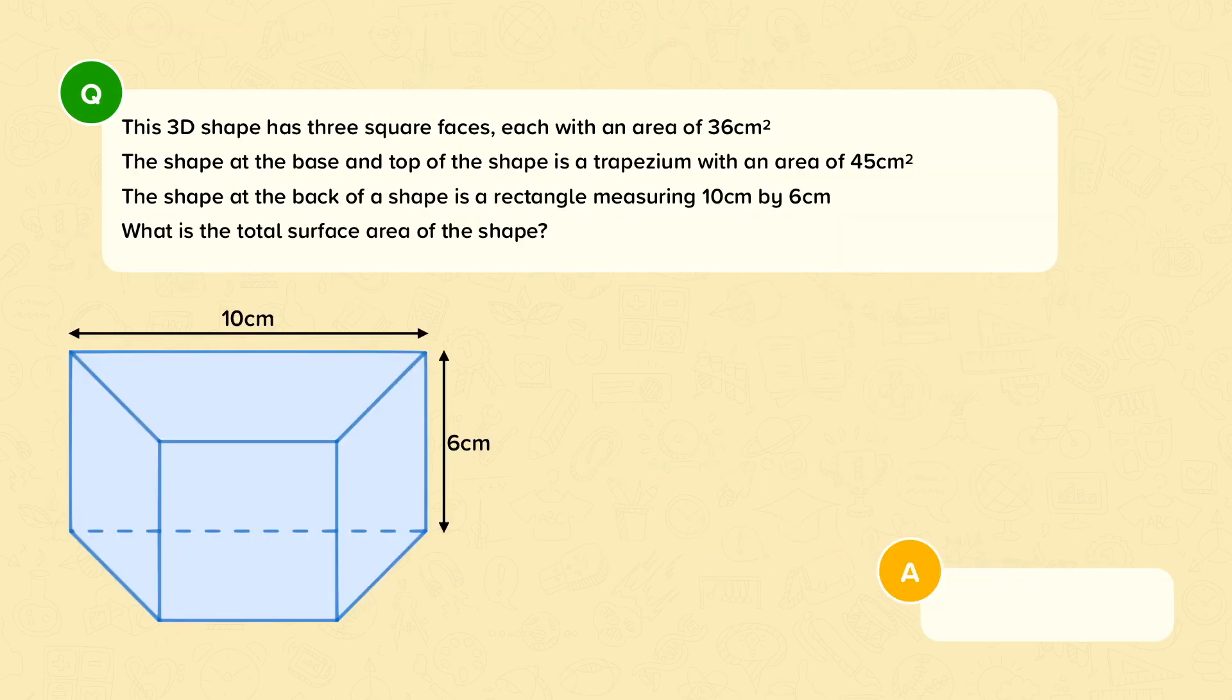This 3D shape has three square faces, each with an area of 36cm squared. The shape at the base and top of the 3D shape is a trapezium with an area of 45cm squared.